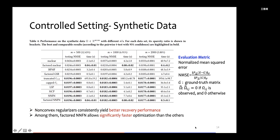As shown in the table, you can see that non-convex regularizers consistently yield better recovery performance, and among them factored NNFN allows significantly faster optimization speed. Although the speed is comparable to factored nuclear norm, performance is much better than factored nuclear norm because we apply adaptive penalty for singular values.